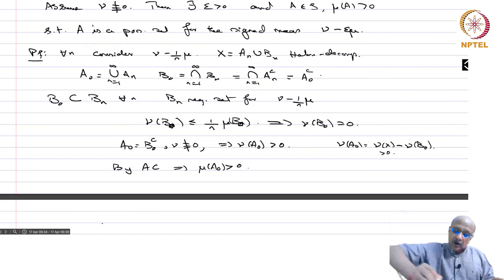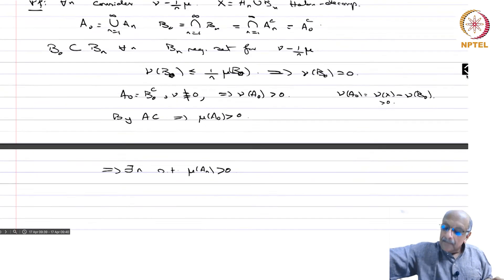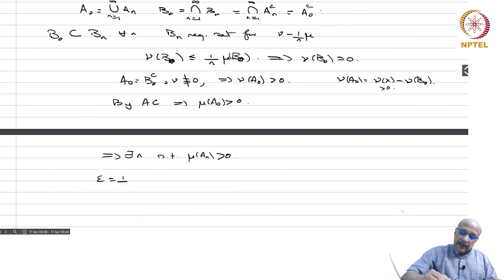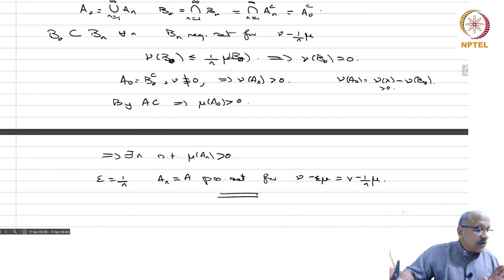Since A_0 = ∪ A_n and mu(A_0) > 0, there exists some n such that mu(A_n) > 0. Setting epsilon = 1/n, A_n is the desired set A, which is a positive set for nu - epsilon*mu = nu - (1/n)*mu. This proves the proposition.